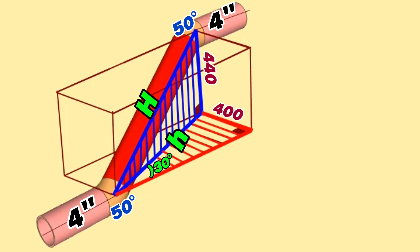Now let's begin to find the lowercase letter h, which is the hypotenuse of the horizontal right-angle triangle. In the red horizontal right triangle, one of the angles is 30 degrees, and the perpendicular side in front of this angle is shown as 400 millimeters.